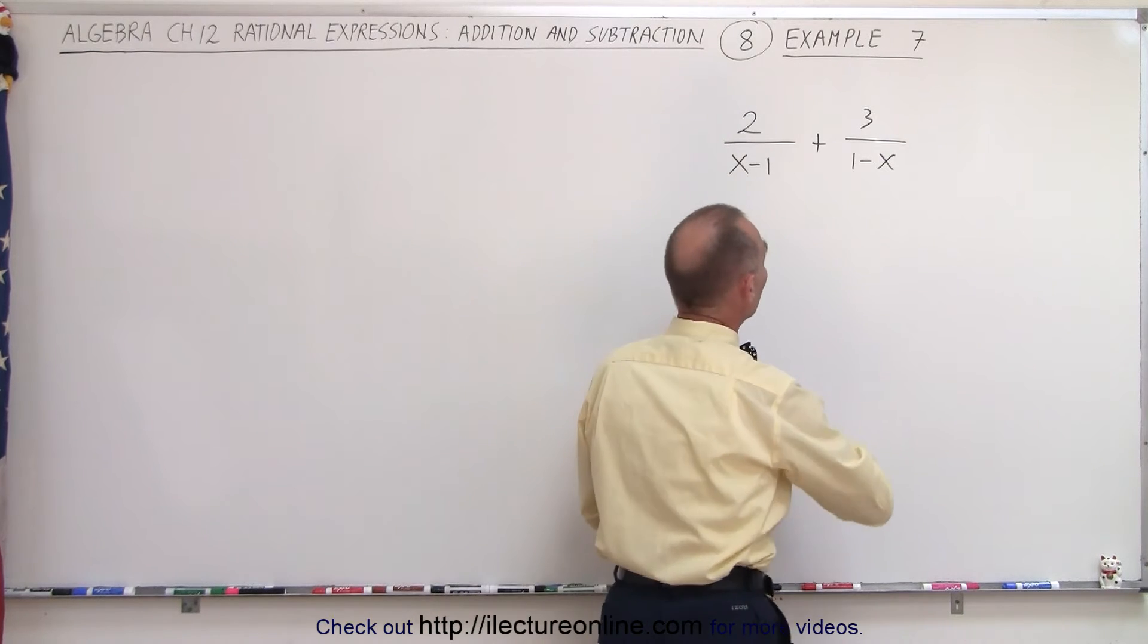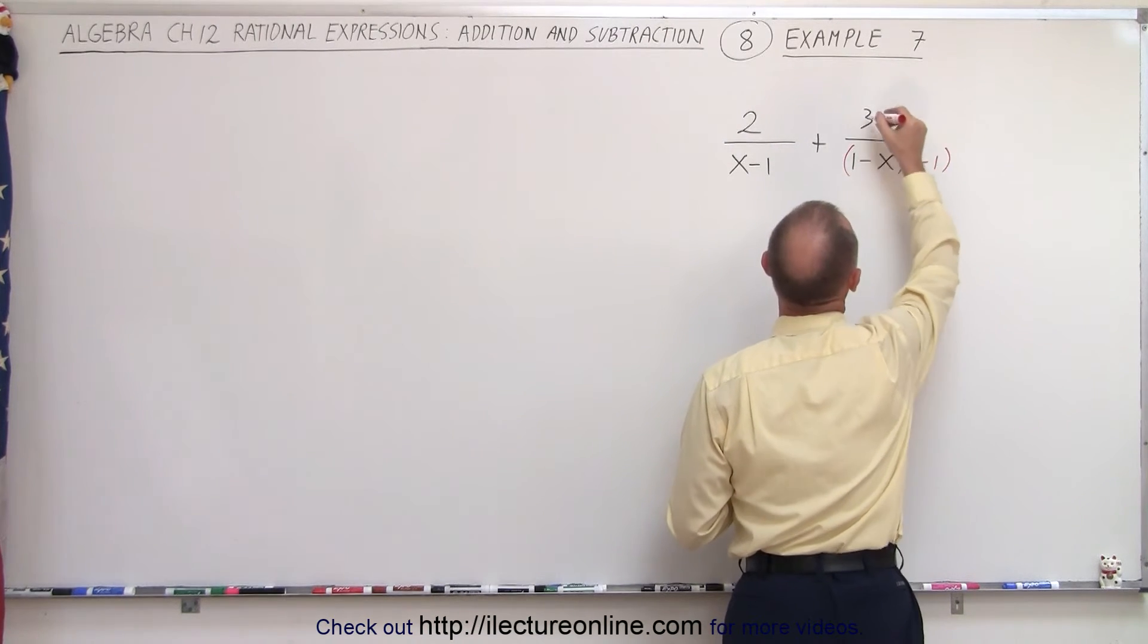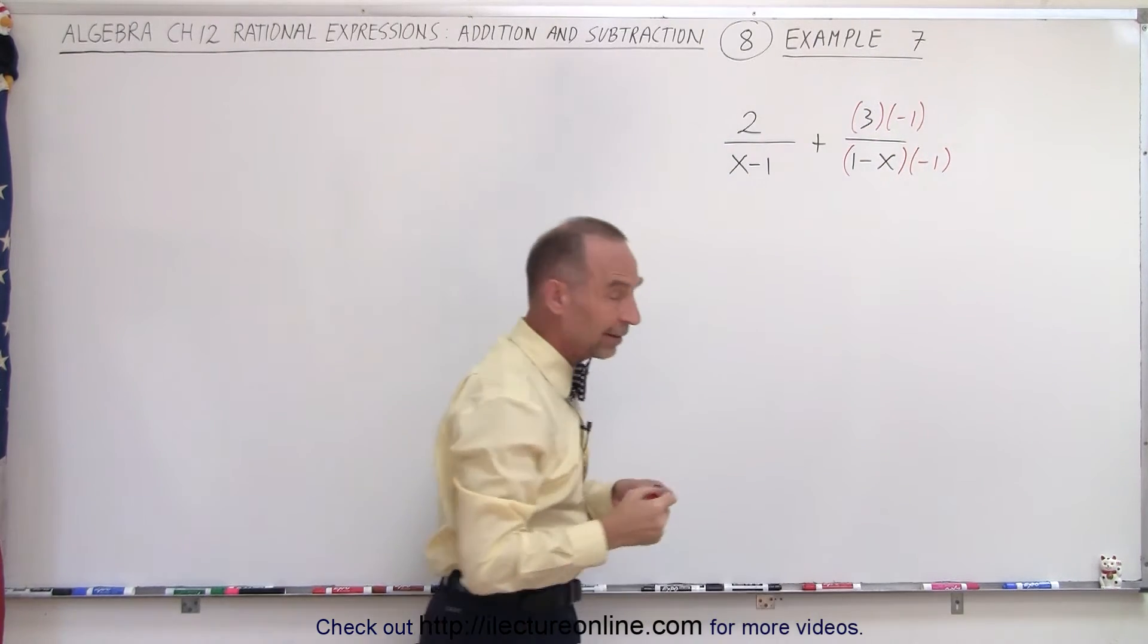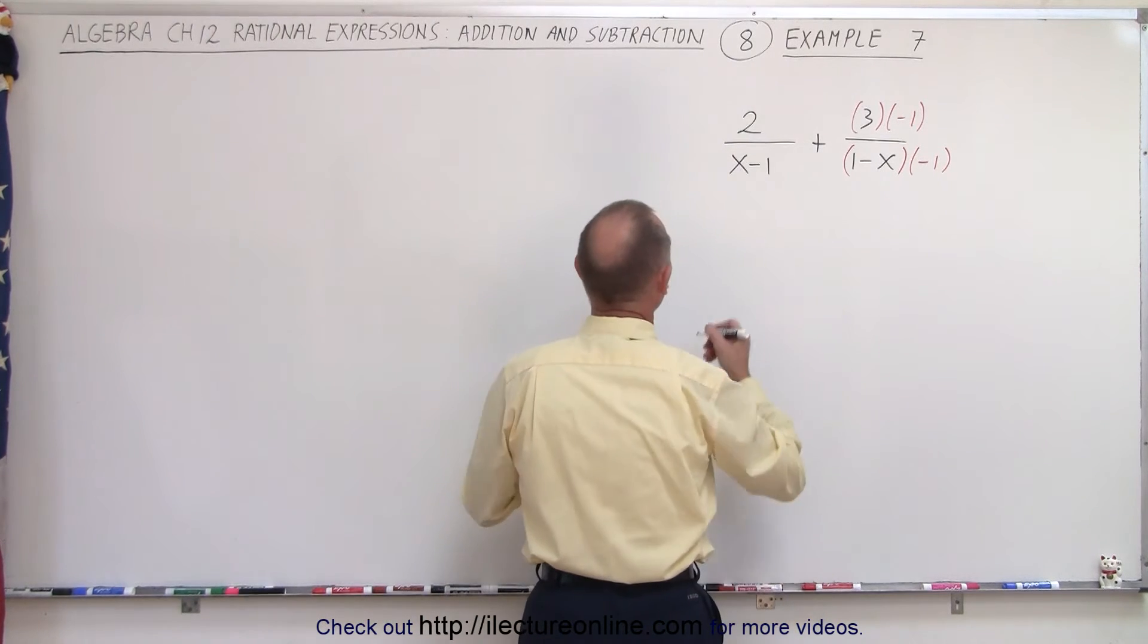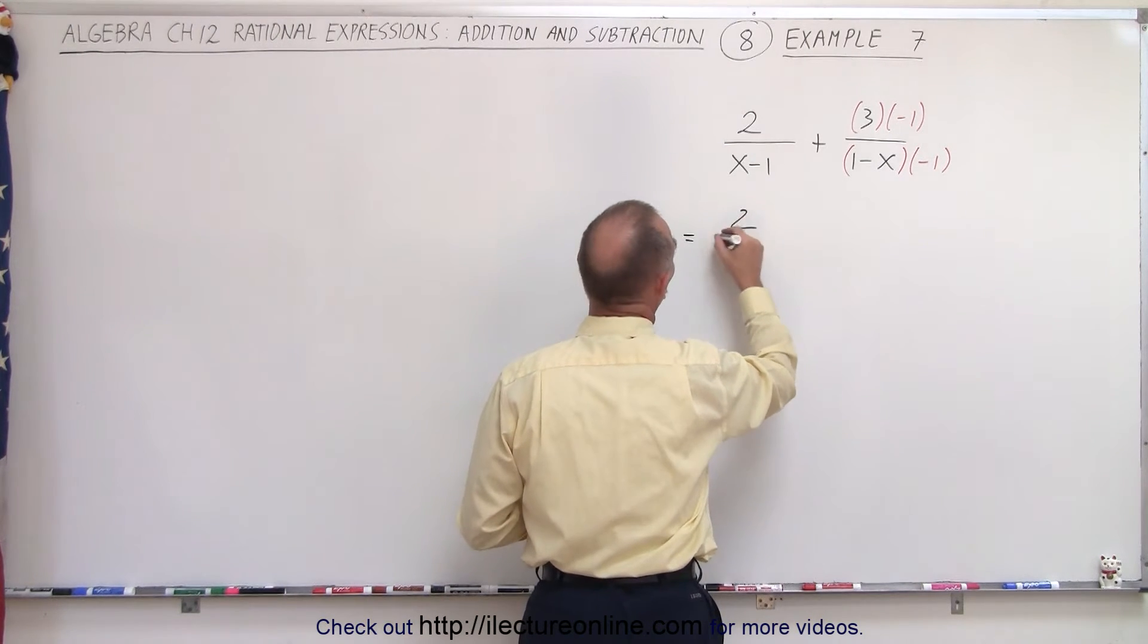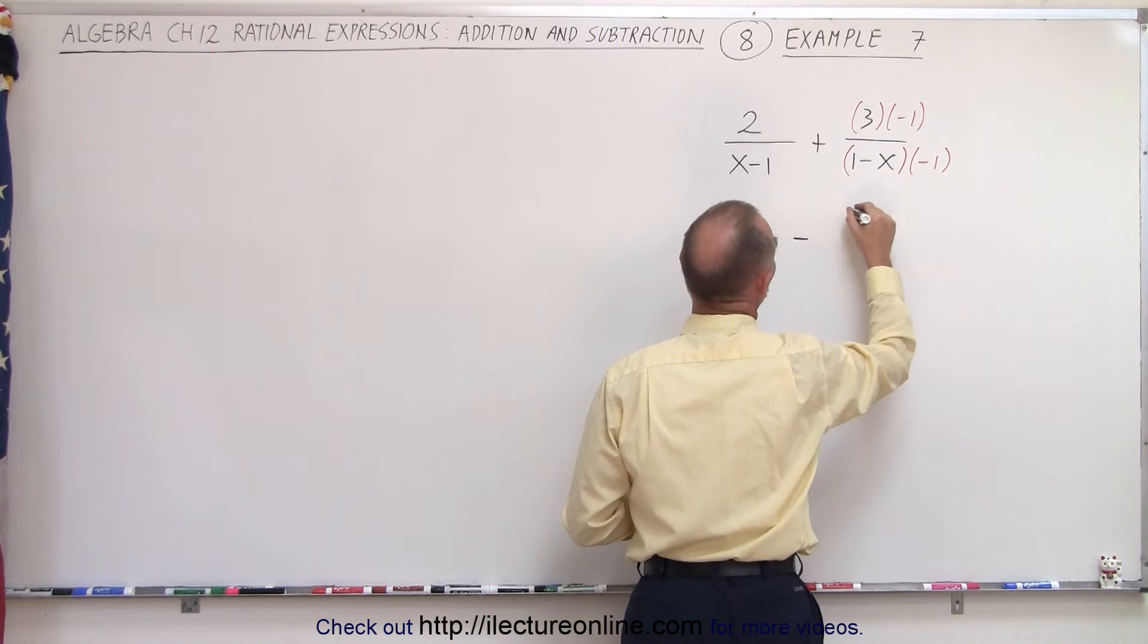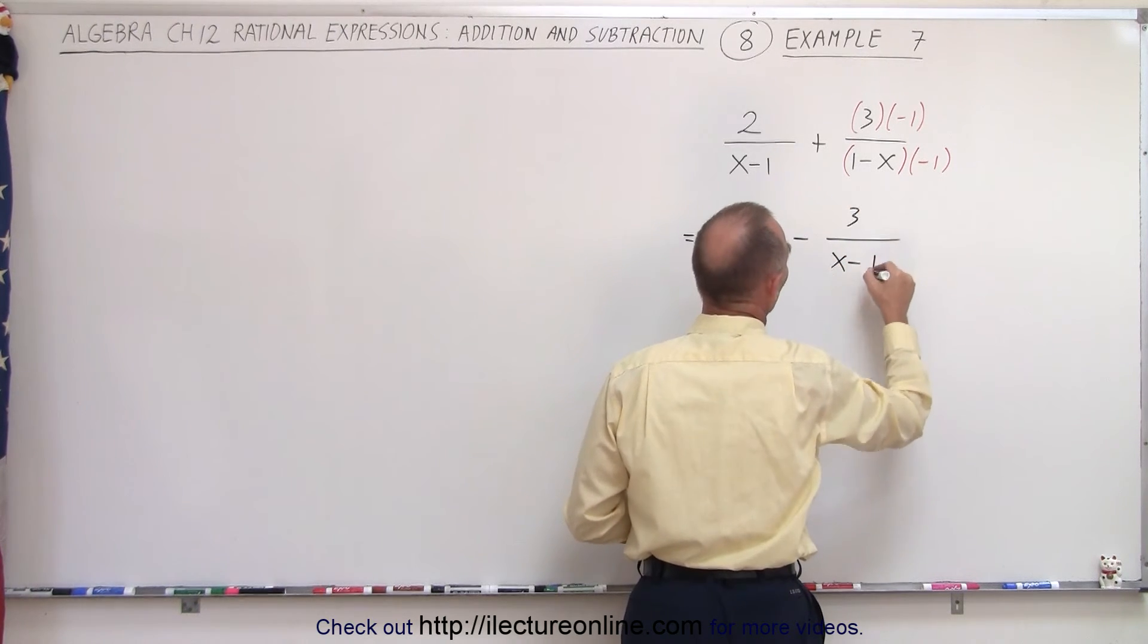So let's do that. We multiply the denominator here by a negative 1 and we multiply the numerator by a negative 1, only on the right side. Now let's see what happens. So this now becomes the same as 2 over x minus 1 and 3 times a negative 1 becomes a minus 3 over and this times this now makes that an x minus 1.